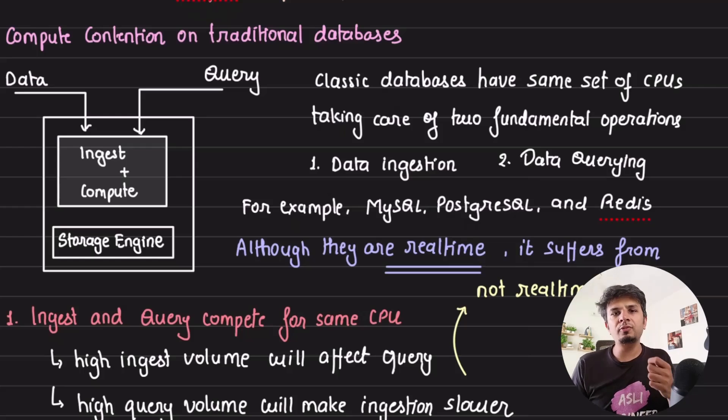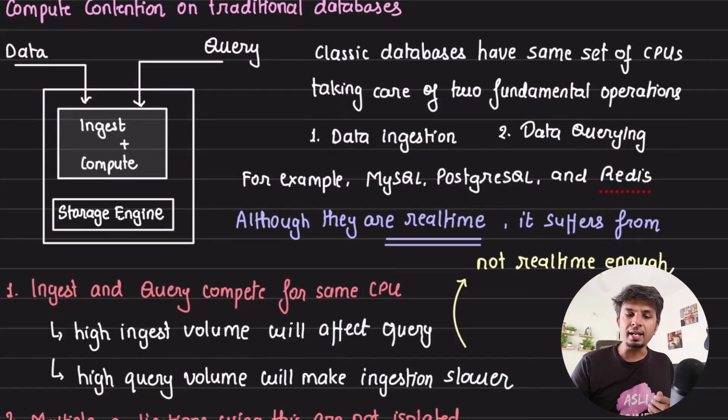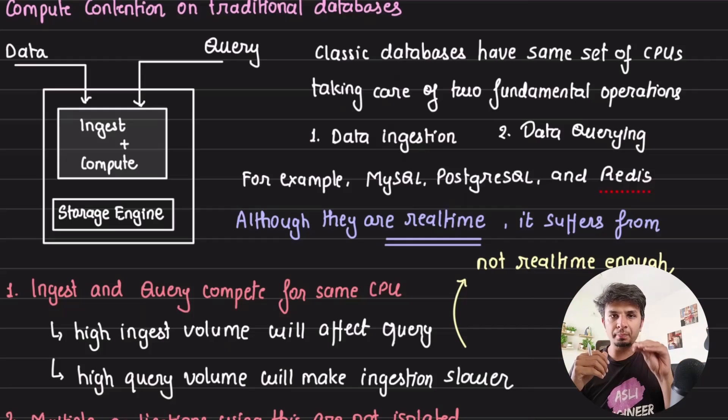But this suffers from a lot of problems. The major one is that, given that your queries to ingest and your queries to compute are being served from the same node, there is a contention, there is a resource contention happening. Your ingest workload and your query workload are contending for the same set of hardware resources. Because the CPU, memory and all are limited, they are contending for it. Which means, if there is a high ingestion volume, your query would suffer. And if there is a high query volume, your ingestions would suffer. That is problem number one.